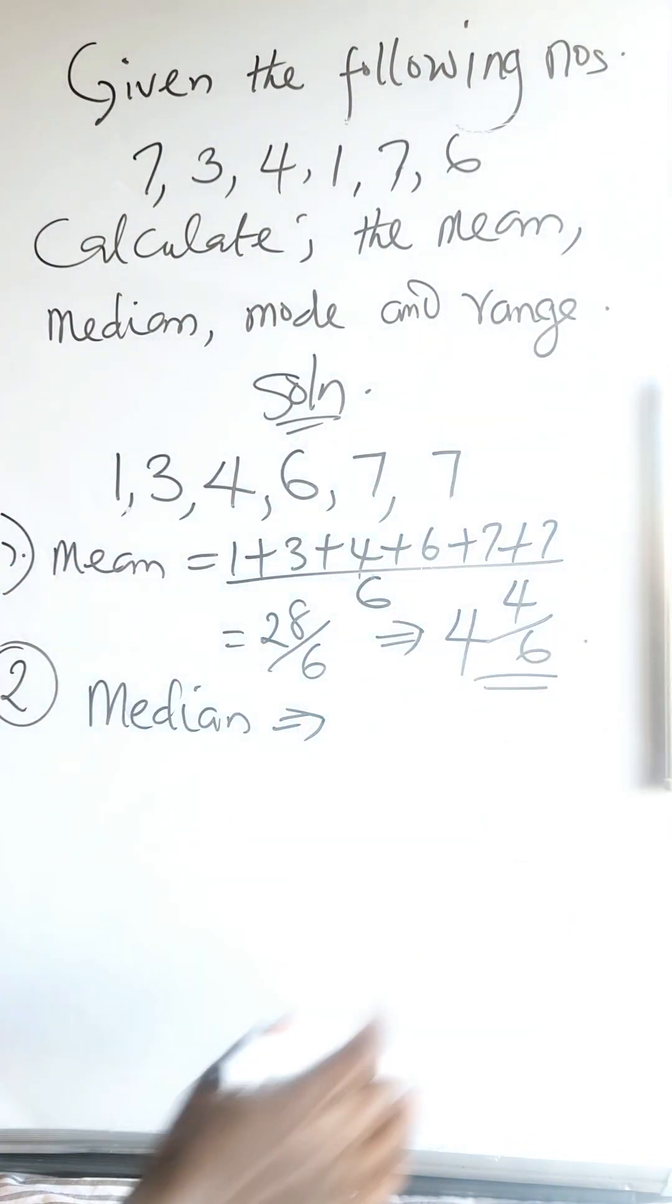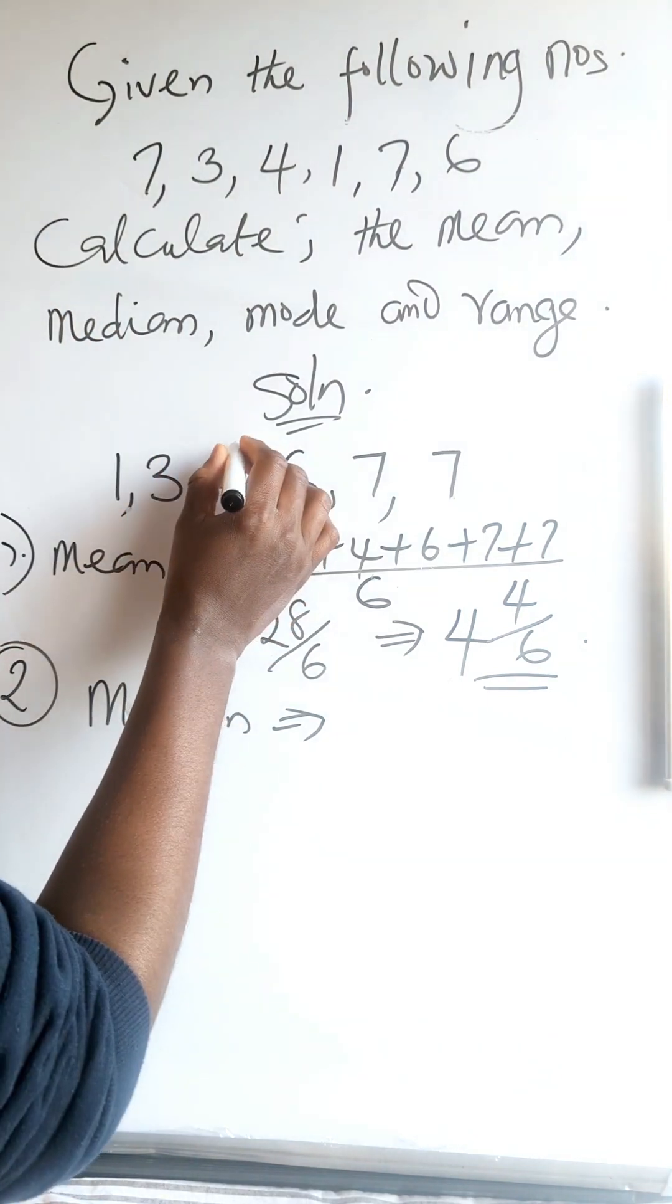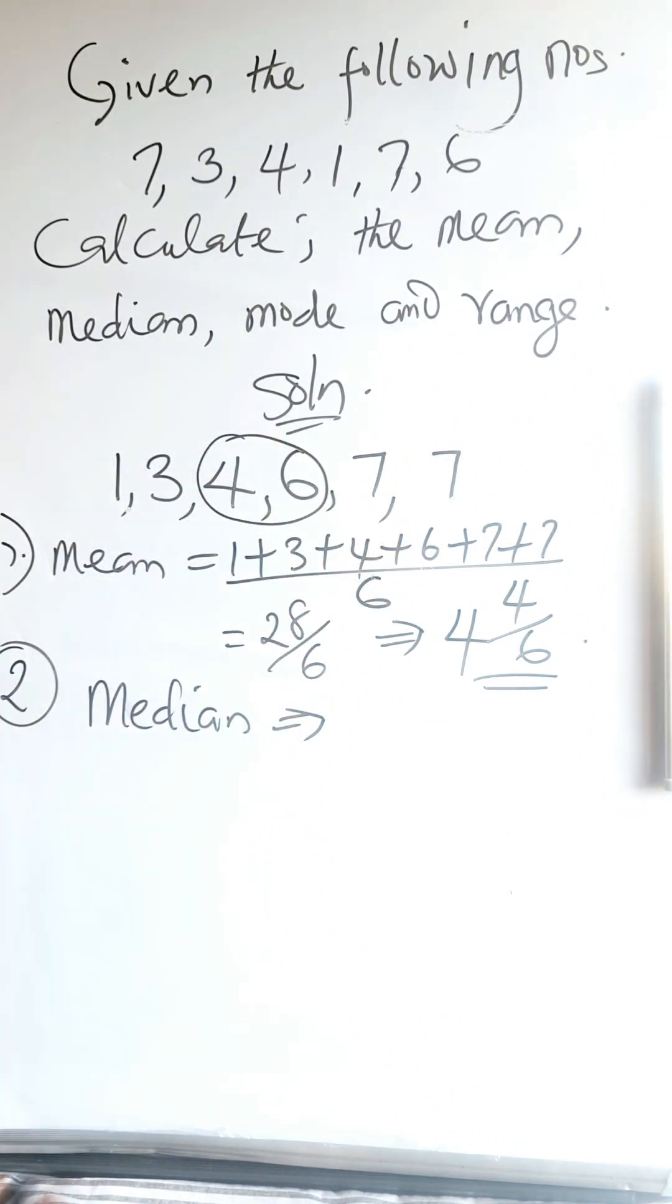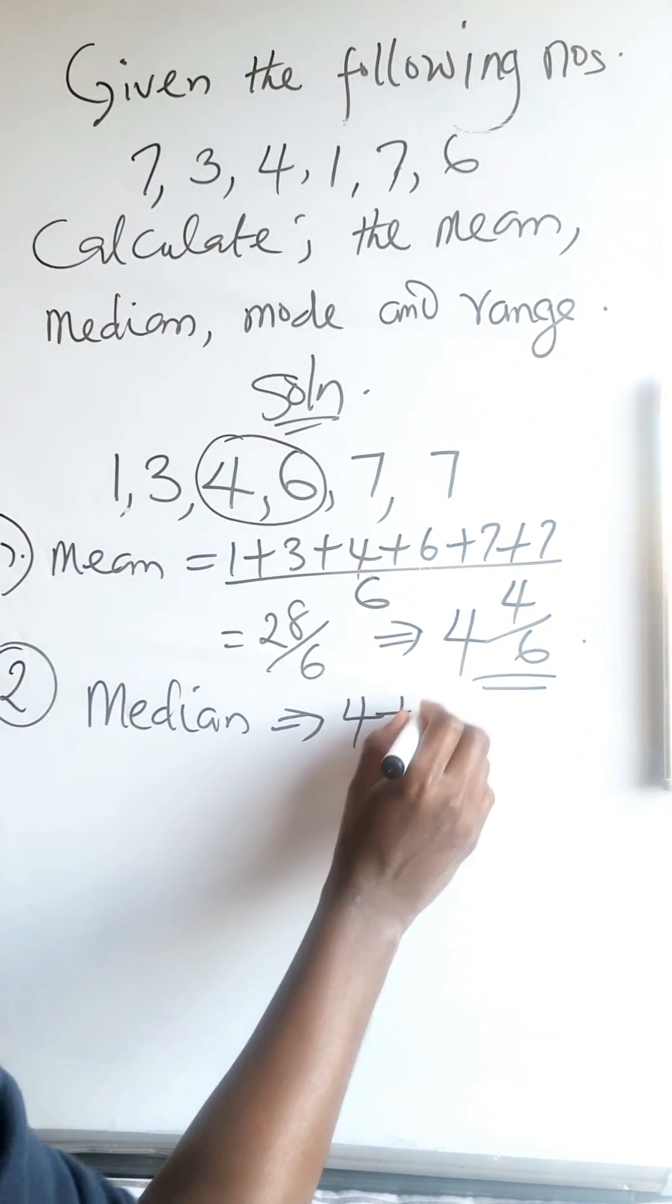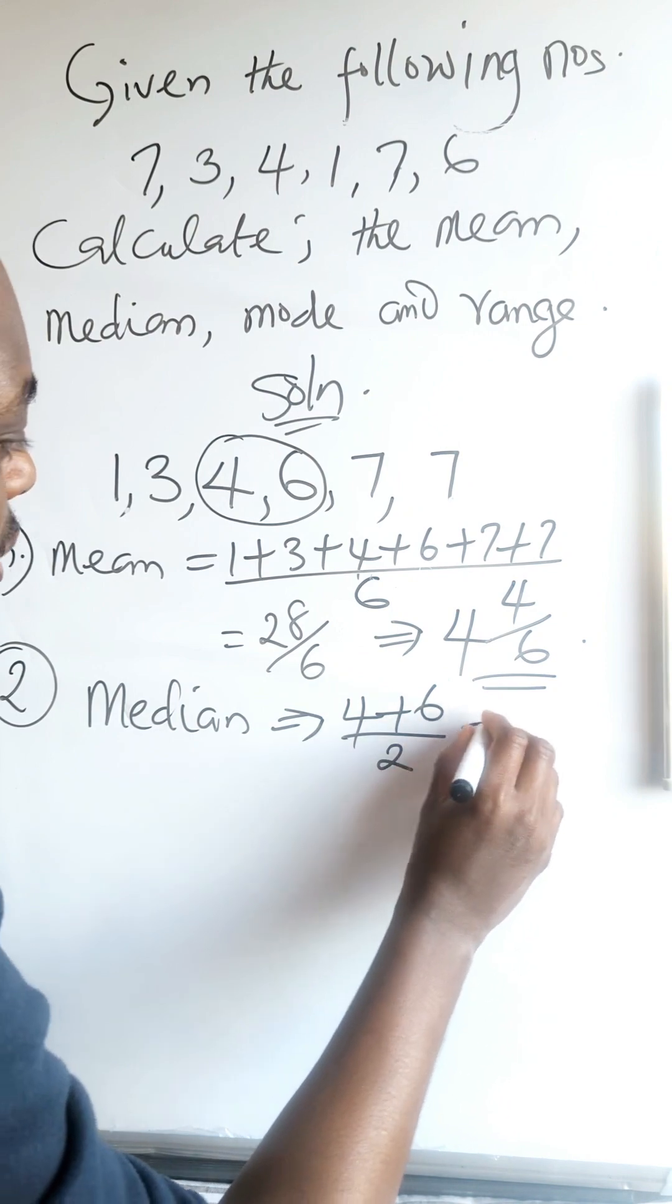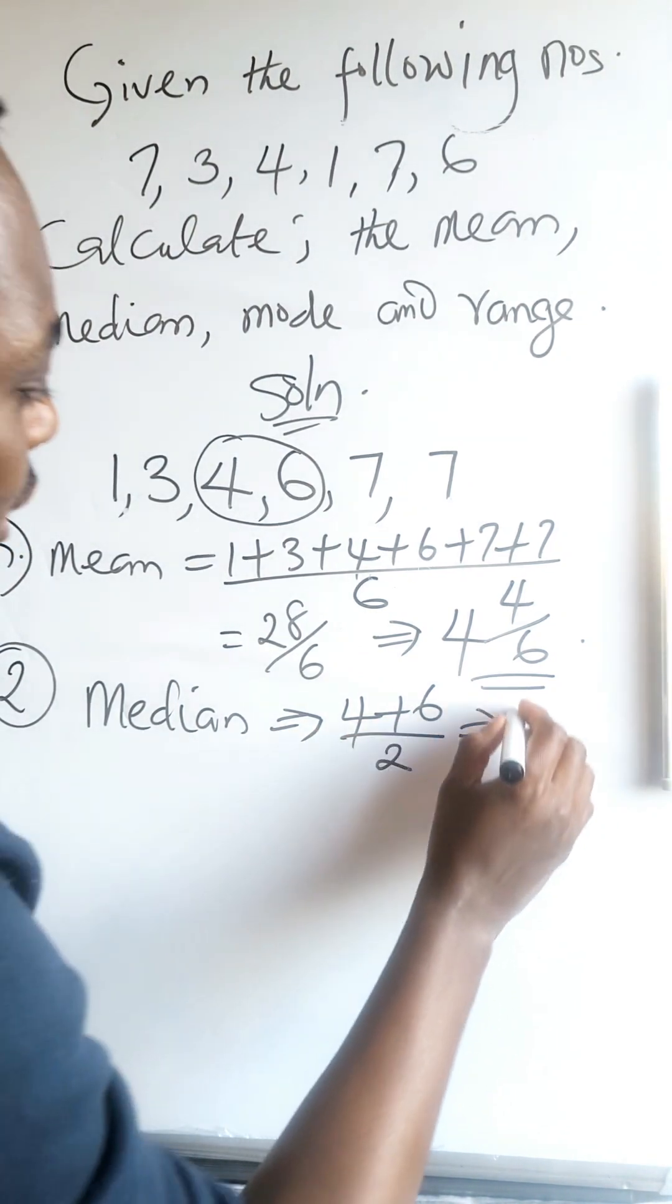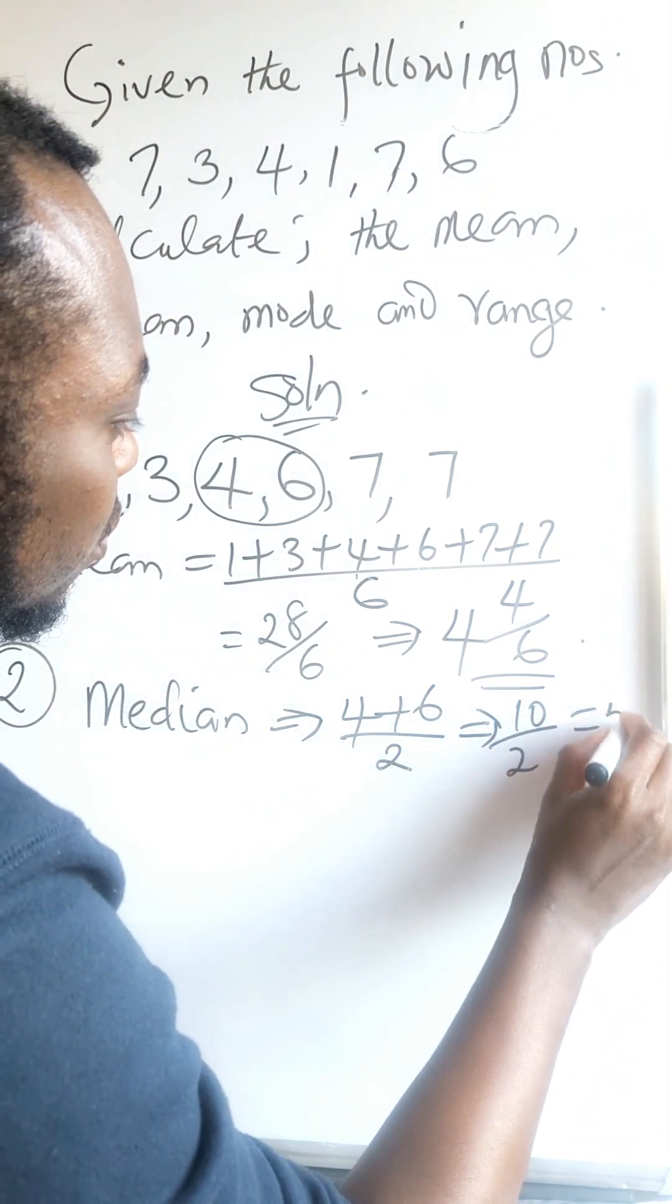If there are 7 numbers, 1 number will stand out as the middle number. But because we don't have 1 number standing out as the middle number, we have 2 middle numbers. So you add them: 4 plus 6 divided by 2, which is 10 over 2 and equals 5.